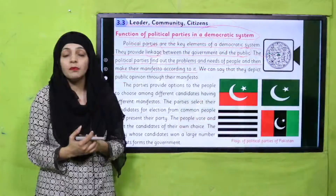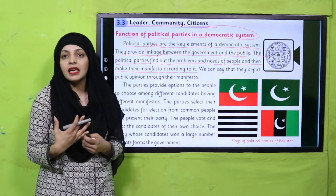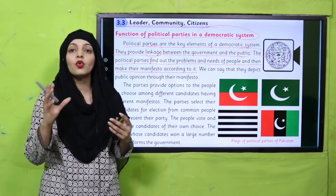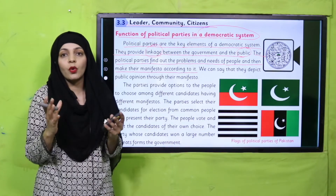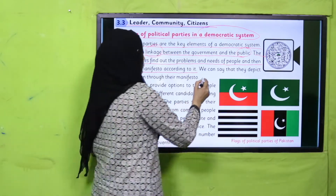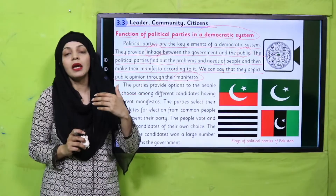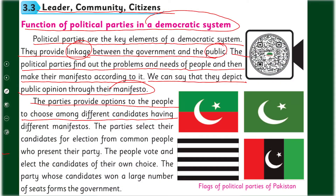Political parties jo hain, ye ek democratic system ke liye bahut important hain, kyunki jo candidates ek political party mein hote hain, wo general public mein se hi aate hain. Is tarah unhe general problems ka pata hota hai jo mukhtalif areas mein hote hain. Inhe madde nazar rakhte hue political parties apna manifesto — yani aims aur principles — banate hain. We can say they depict public opinions through their manifesto.